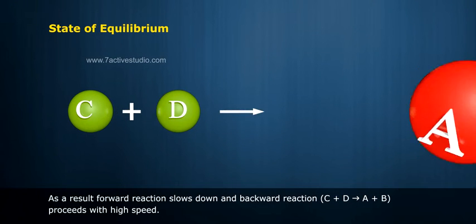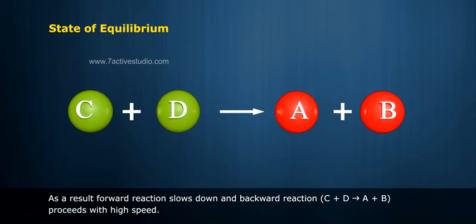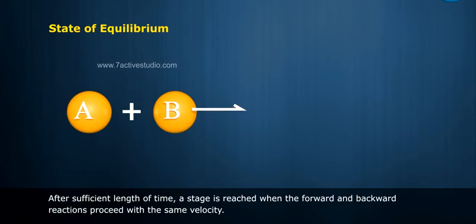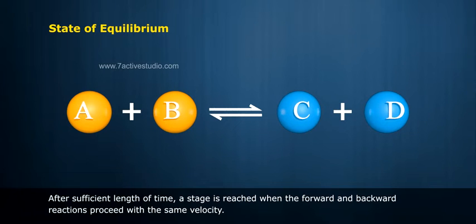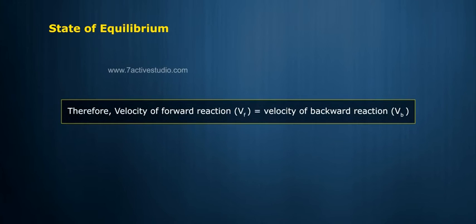As a result, the forward reaction slows down and the backward reaction C plus D leads to A plus B proceeds with high speed. After sufficient length of time, a stage is reached when the forward and backward reactions proceed with the same velocity. Therefore, velocity of forward reaction VF equals velocity of backward reaction VB. Then the reaction is said to have attained a state of equilibrium.